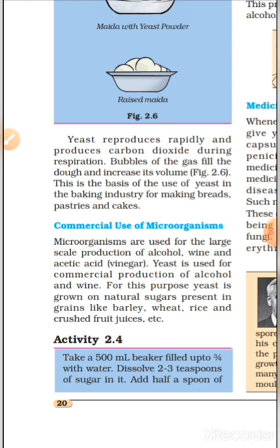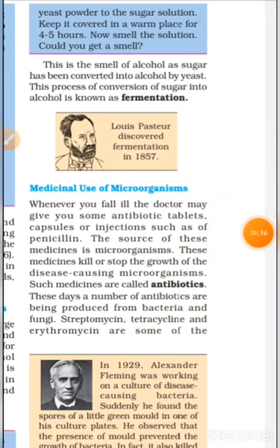Activity 2.4: Take a 500 ml beaker filled up to 3/4 with water, dissolve 2-3 teaspoons of sugar in it, add 1-3 teaspoons of yeast powder, cover and keep warm for 4-5 hours. Now smell the solution. This is the smell of alcohol as sugar has been converted into alcohol by yeast. (Yeh ganth alcohol ki hai jo chini ke alcohol mein parivartit hone ke karan bani hai.) The process of converting sugar into alcohol is called fermentation (kidwan).